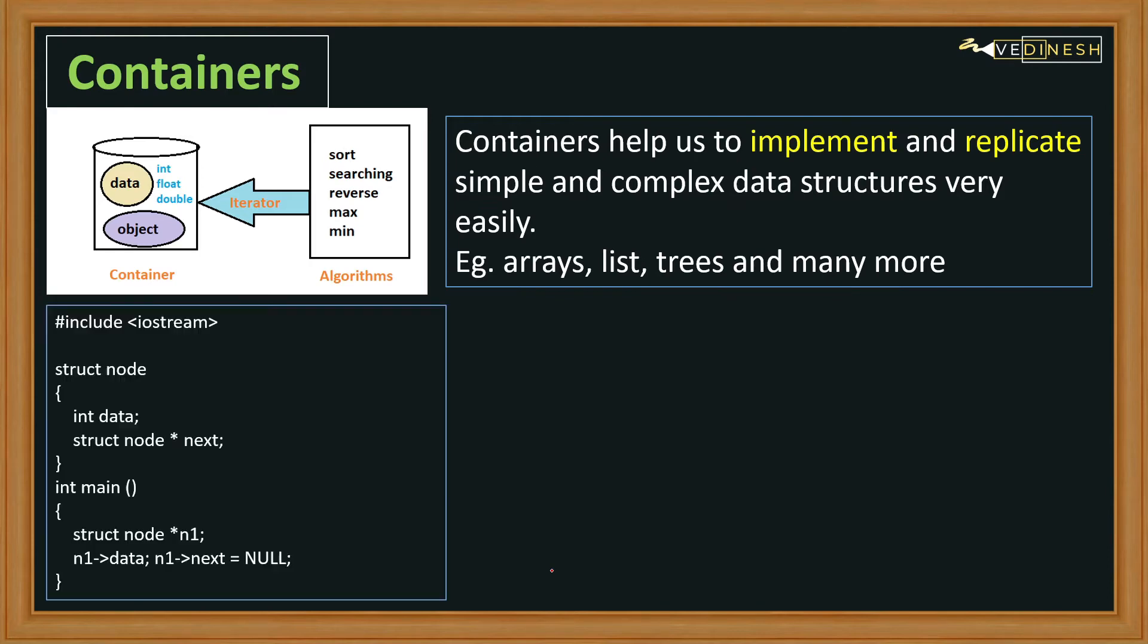For that we're going to take an example of a linked list. We will create a linked list with the help of C++ code. Here we have created struct node, and in the body of the struct we have the integer data type in which we're going to store our data, which is of integer type. Followed by that, we have a pointer which will be pointing to the next node.